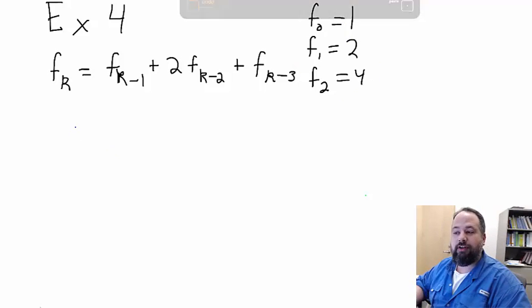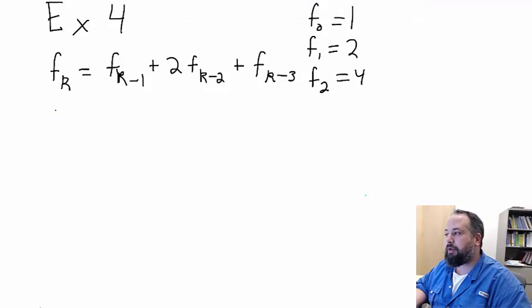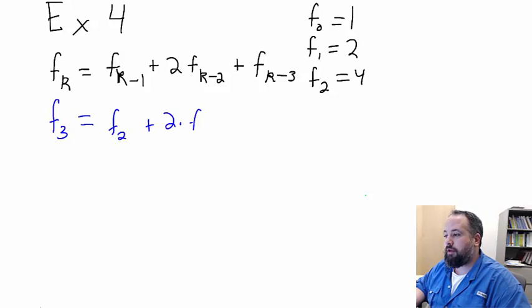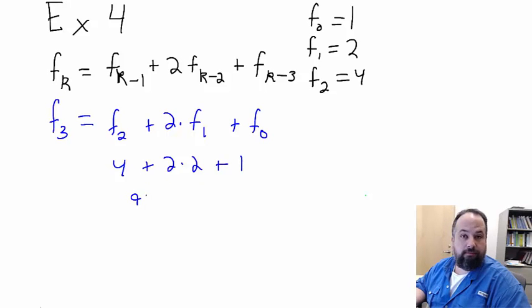Let's plug a few numbers into this just to see how it works out. So f of 3 is the smallest one we need to calculate because 0, 1, 2 are all base cases. So that's going to be f of 2 plus 2 times f of 1 plus f of 0, which is going to be 4 plus 2 times 2 plus 1, which is going to be 9. So f of 3 is 9.